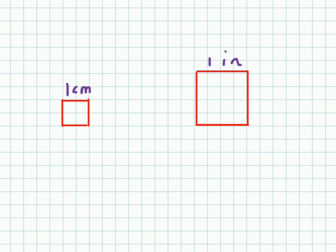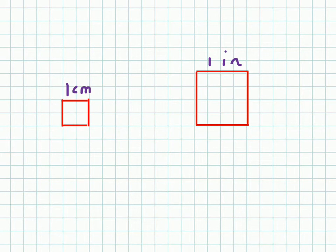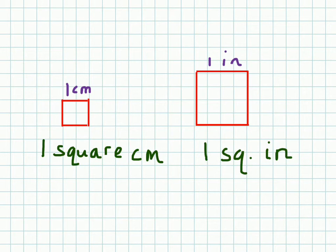Now, one last thing about your unit — usually you're going to have a square centimeter or a square inch. On my iPad mini screen, this is what these look like, but they're probably going to be bigger if you have a bigger screen. Every side here is one centimeter, so this is a square centimeter. Every side here is one inch, so this is a square inch. You can write it as one square centimeter, one square inch, or the other way is one centimeter squared with a little two at the top — cm².